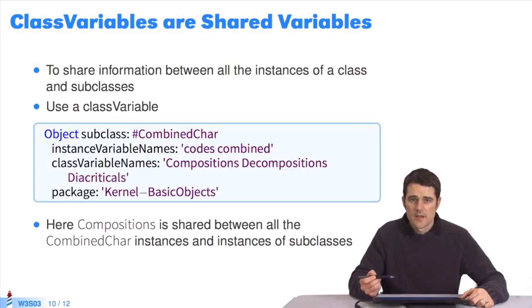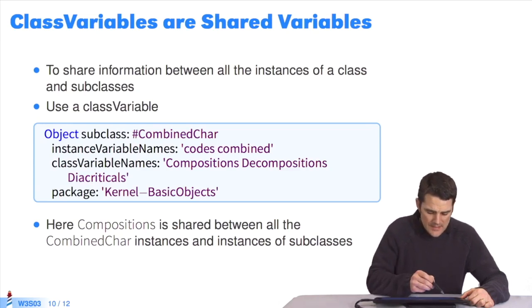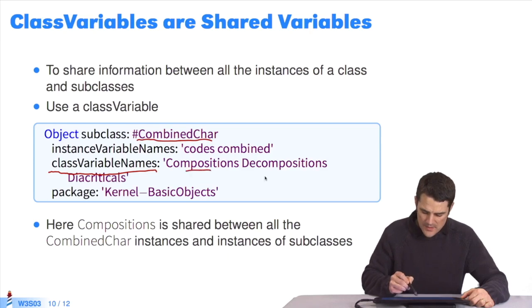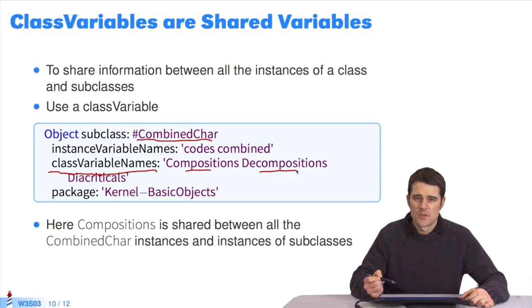There are also class variables, which are declared here when declaring a class in class variable names. Here, the class Hashtag CombinedChar defines two class variables, one called Compositions, and the other, Decompositions. These two class variables are accessible by the combined instances of the class CombinedChar and of its subclasses.